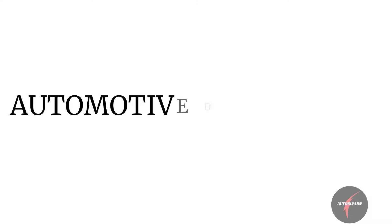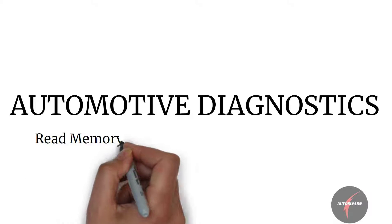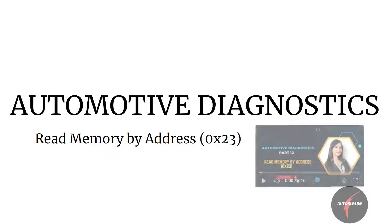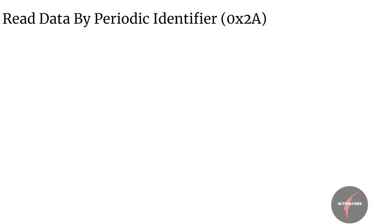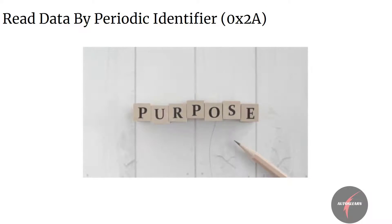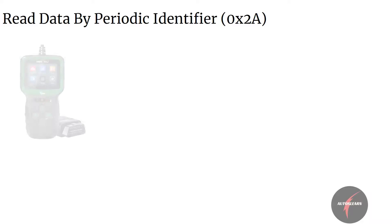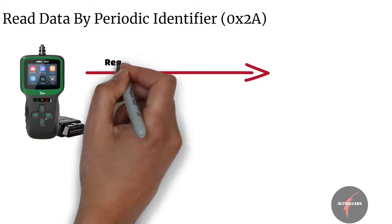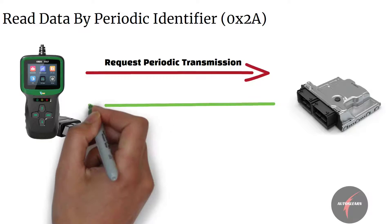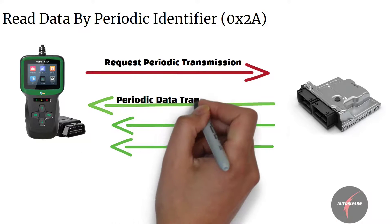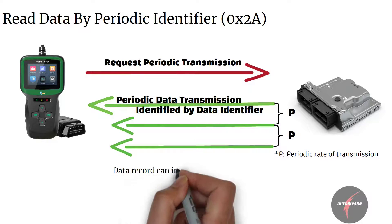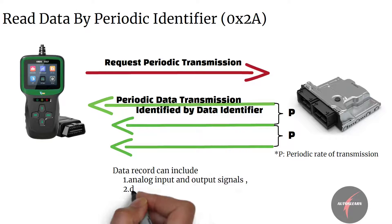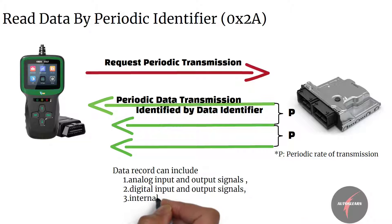In the last video we had a look into details of Read Memory by Address (0x23) service. Let's have a look into the next diagnostic service: Read Data by Periodic Identifier (0x2A). The purpose of this service is to allow the client to request a periodic transmission of data record values from the server, identified by one or more periodic record data identifiers. The data record can include analog input/output signals, digital input/output signals, internal data, system status, etc.